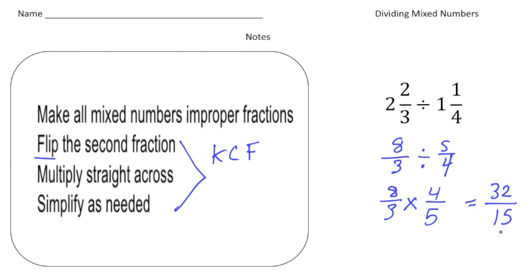And now we can say how many times is 15 going to 32. And that goes in two all times with a remainder of two. So it's two and two fifteenths.